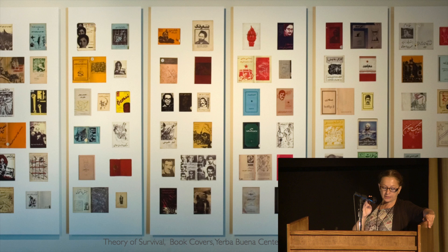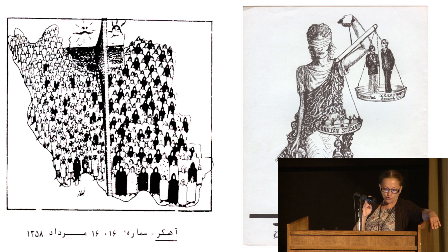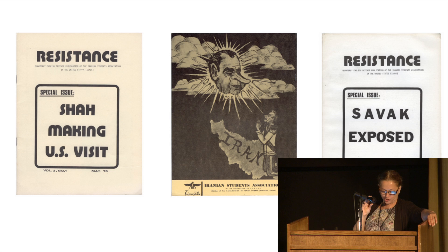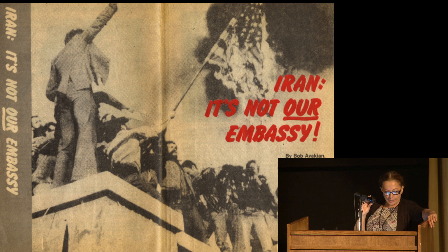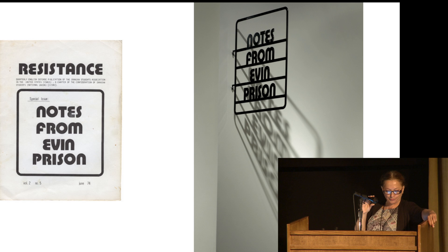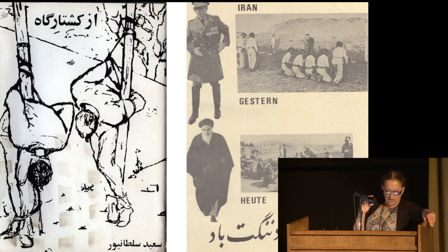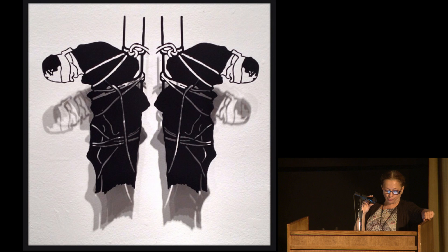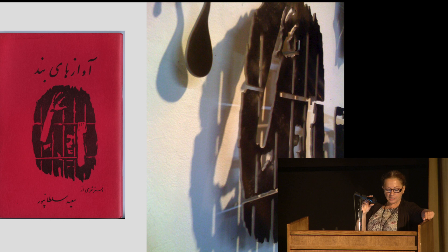To that end, every strike and demonstration, every arrest, trial, sentencing, and execution that happened in Iran was a call to action for the student movement abroad. An ongoing campaign to free political prisoners in Iran sometimes included prolonged hunger strikes and at times extreme actions such as chaining themselves to the crown of the Statue of Liberty or the Golden Gate Bridge, leading to many arrests and imprisonments in this country.